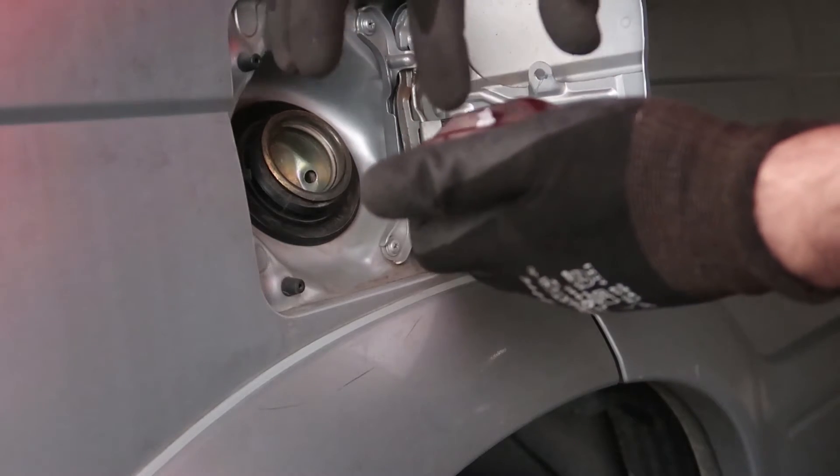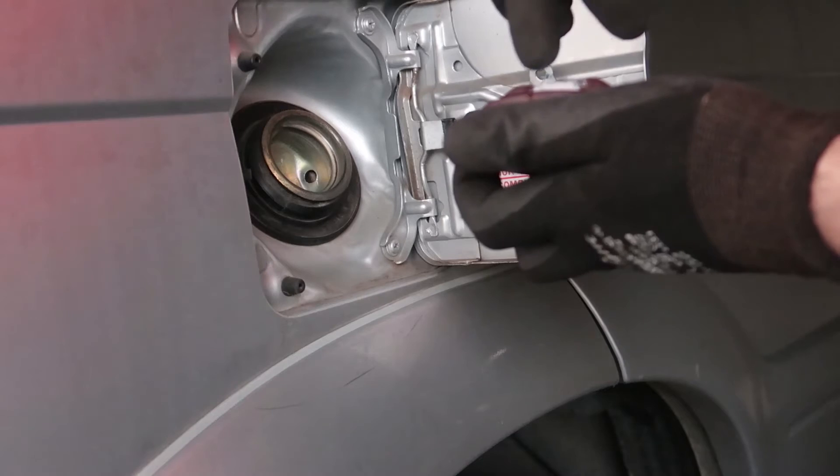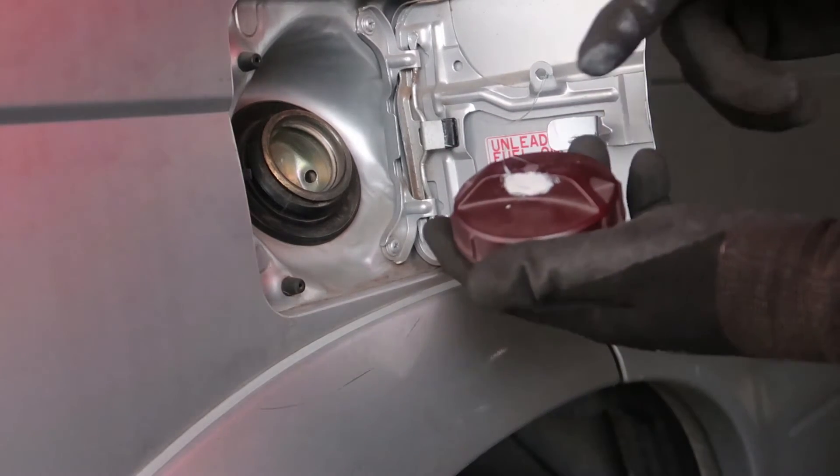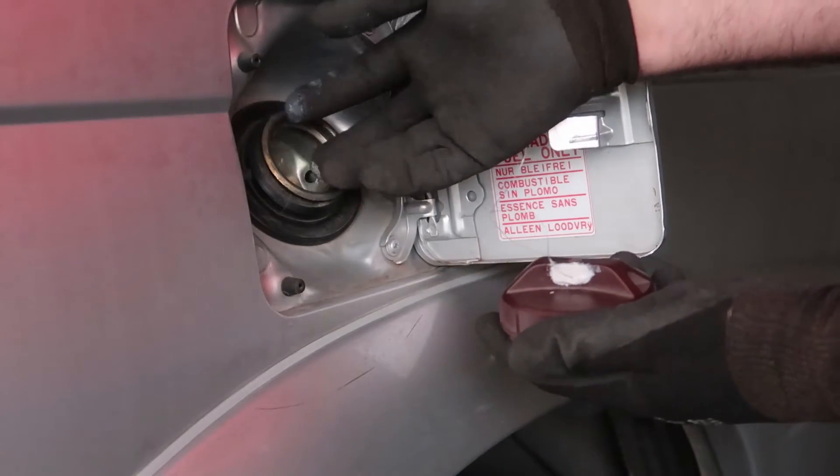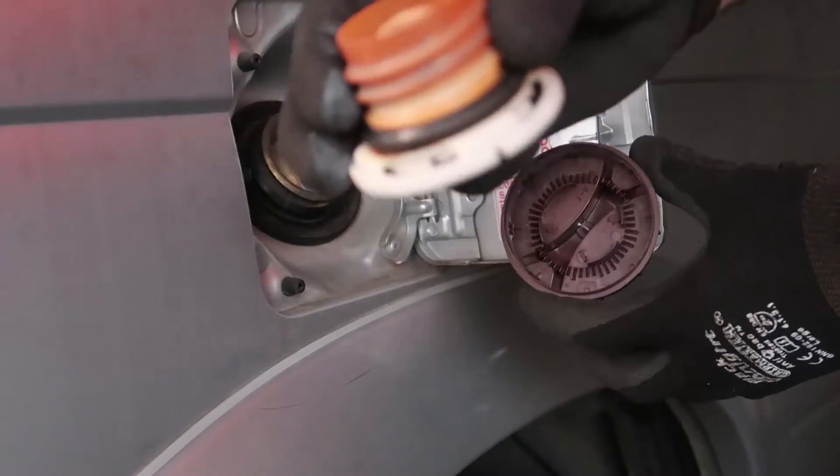So why did we put silicon in there? We put silicon in here to stop the smell of the petrol and also the pressure. When we're done, put that thing back in there, pretty easy.